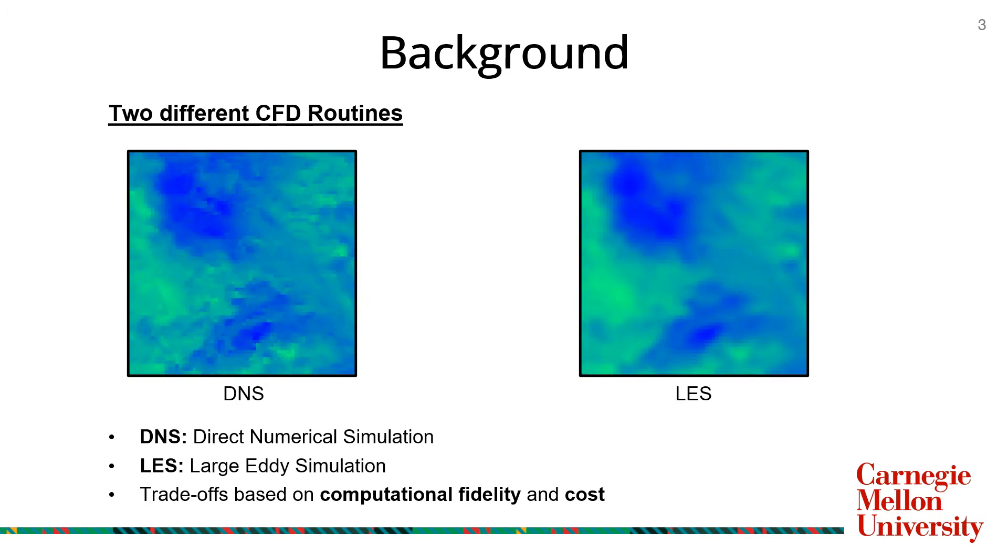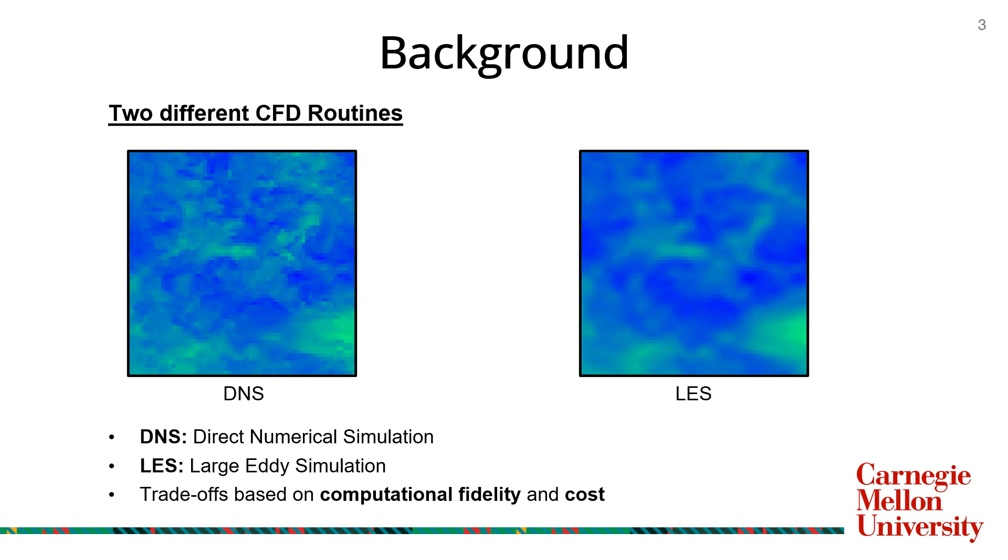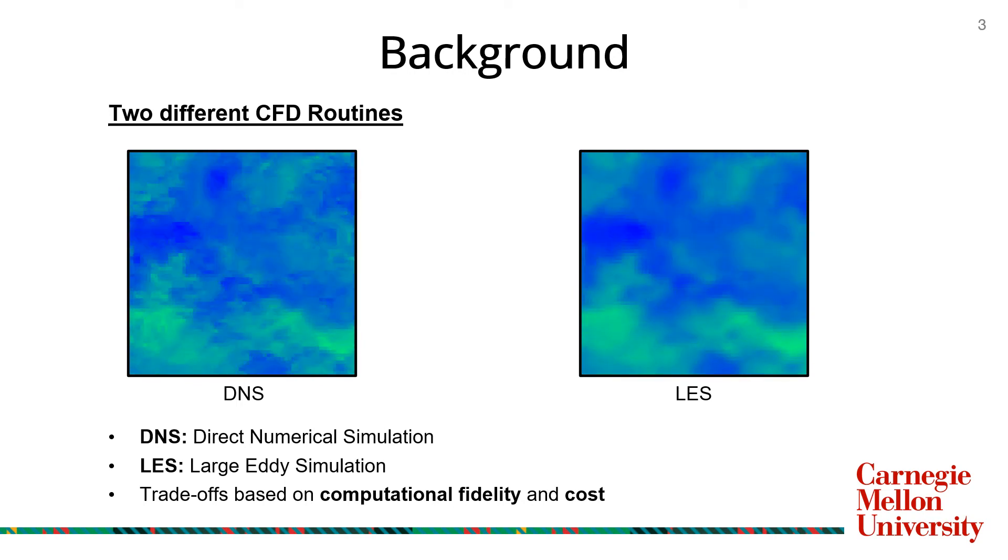On initial analysis, it would seem that DNS would always be the preferred choice for analyzing fluid flow. But unfortunately, the choice is not so straightforward.